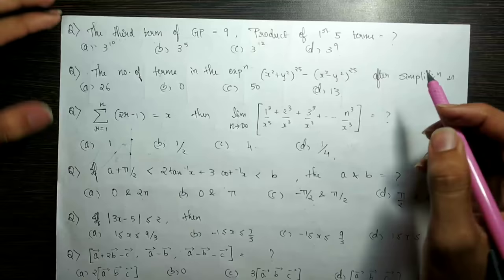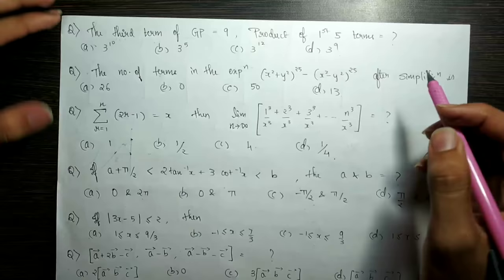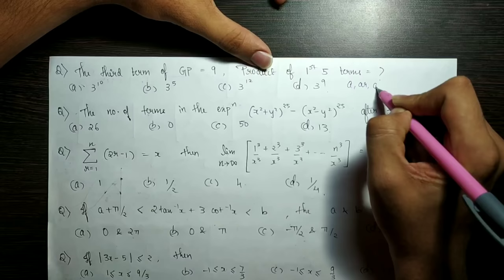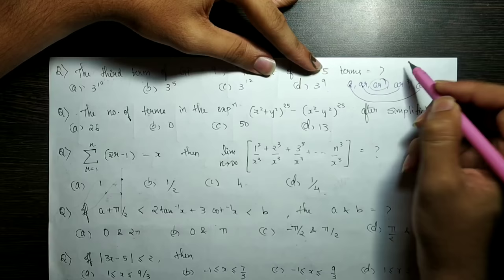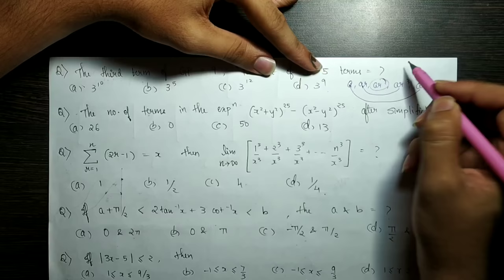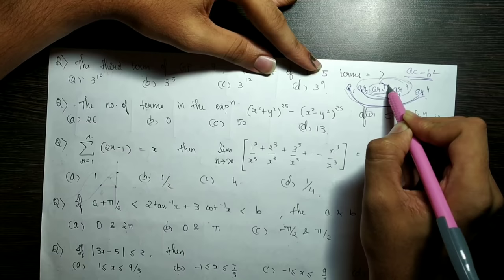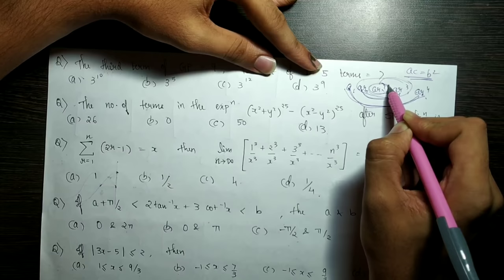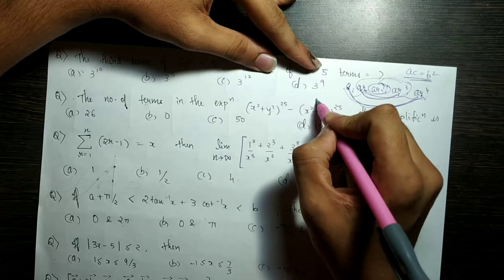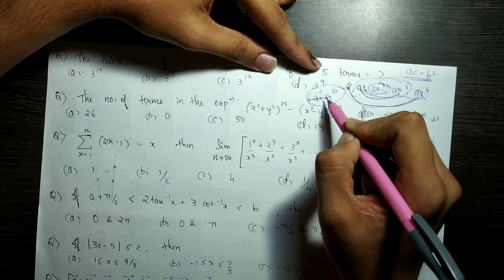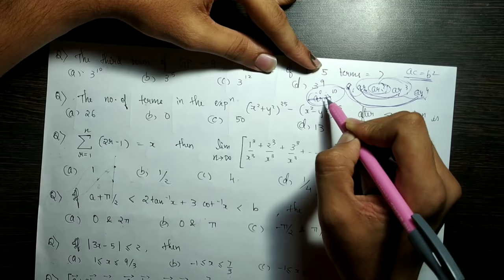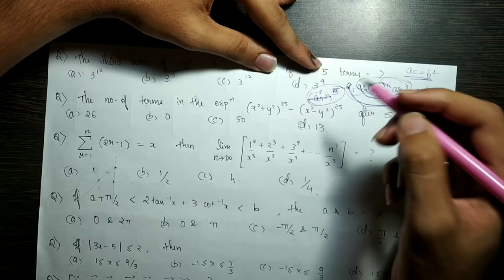GP question: product of first 5 terms equals 9. The 5 terms are a, ar, ar², ar³, ar⁴. Multiplying these gives a⁵·r^(10). But since the product equals 9, and a²r⁴ paired terms simplify, we get a⁵r^10 = 9. So a·r² = 9^(1/5)... Actually a²r⁴ into 2 more times gives a⁵r^10, so 2+2+1 = 5 terms and 9 is 3². So the answer is 3^10.